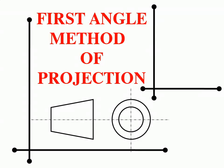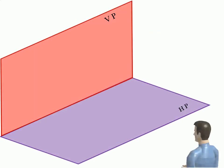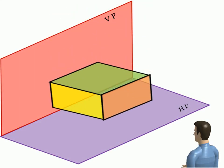In this video we will discuss first angle method of projection. The object is placed in first quadrant, that is in front of VP and above HP. The object lies between observer and plane of projection.